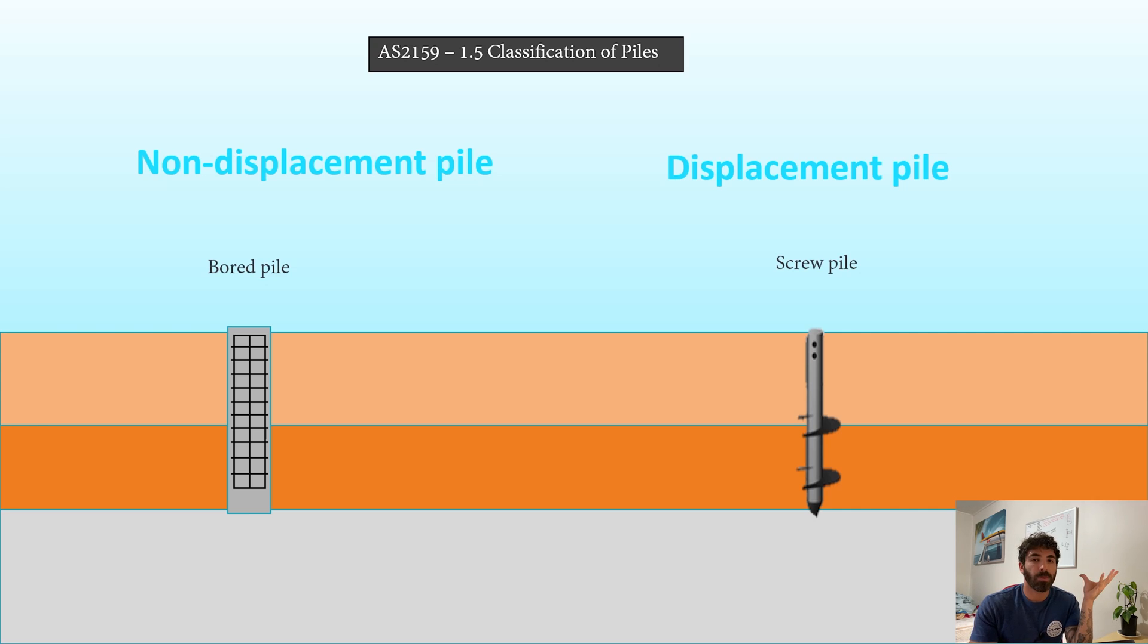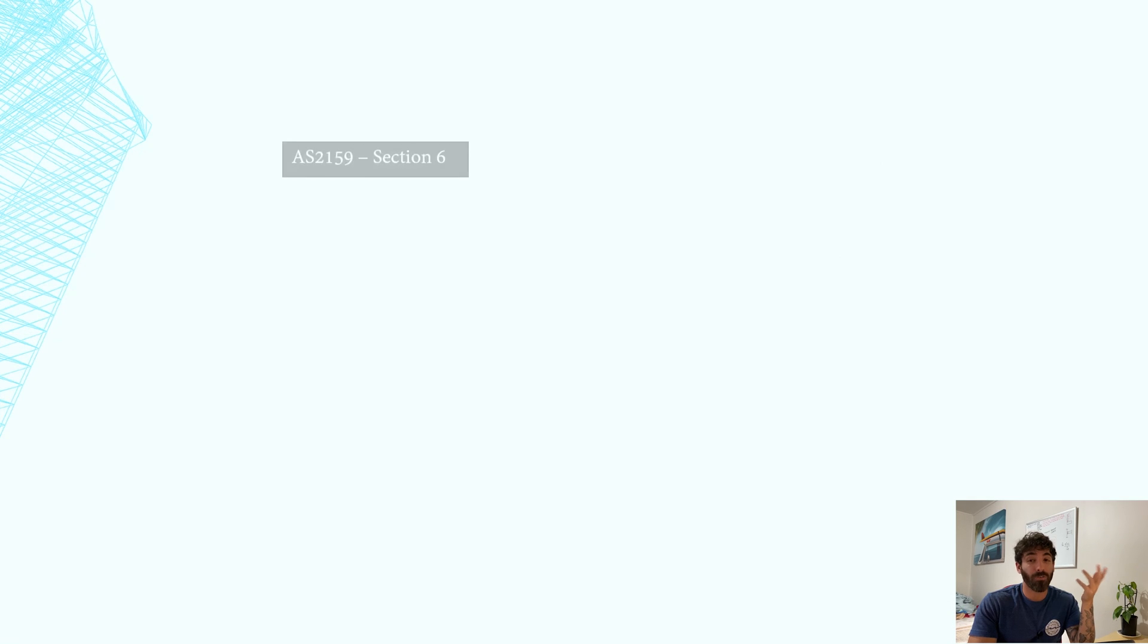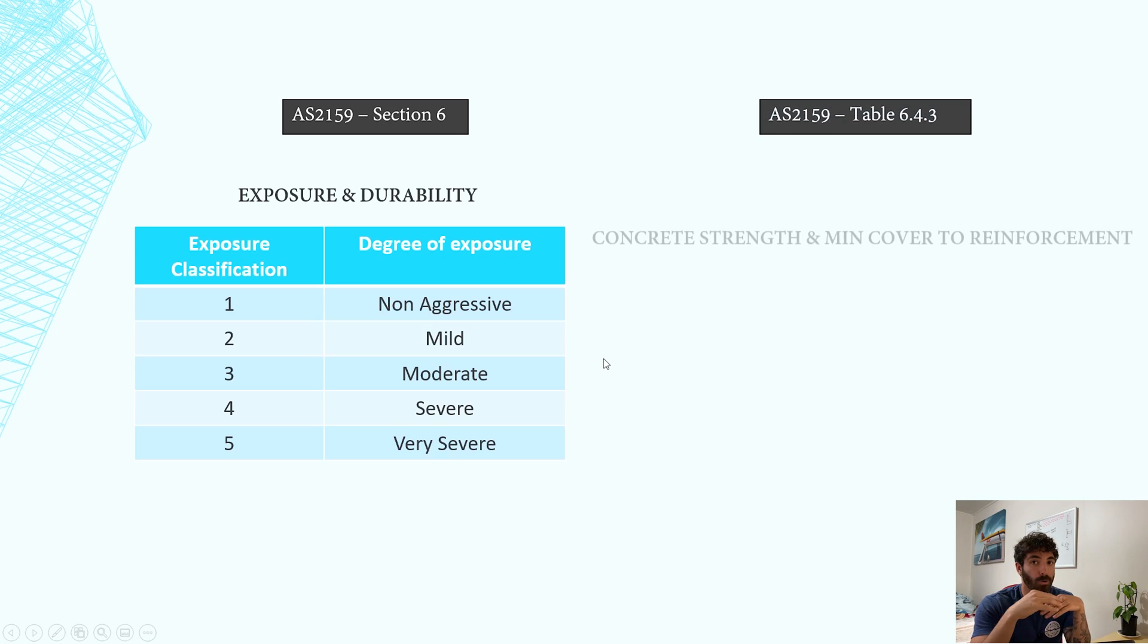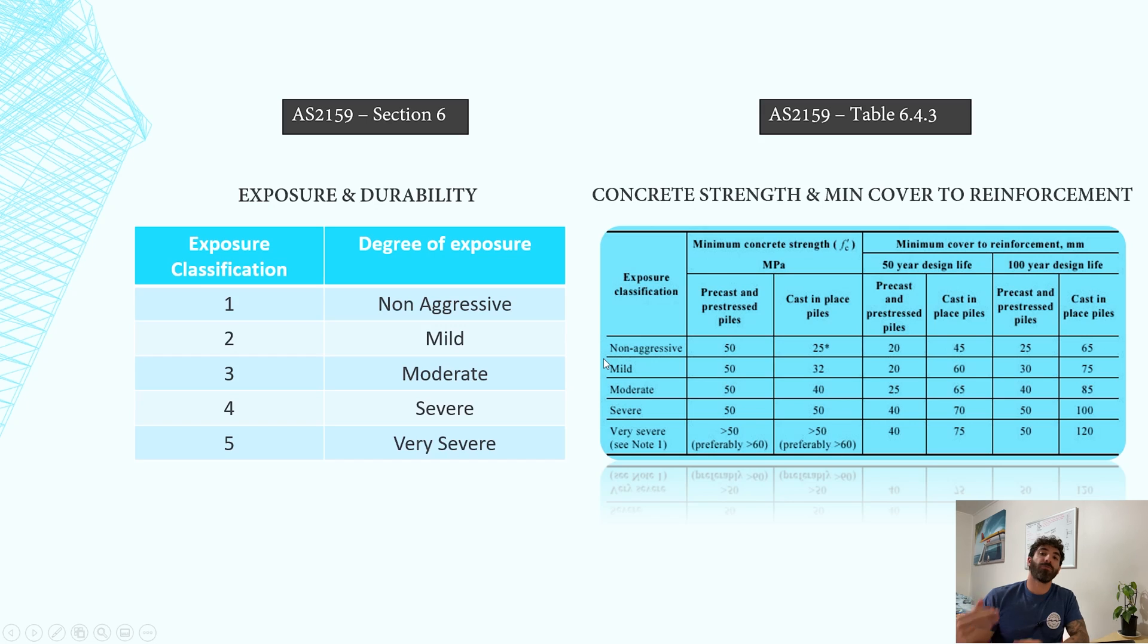Next, you need to identify the degree of exposure that your pile will be subjected to. Is it non-aggressive, mild, moderate, severe, or very severe? You will need this information to choose the concrete aggregate and the minimum cover to the reinforcement as per Table 6.4.3.